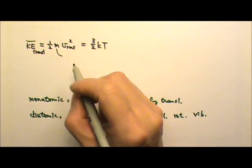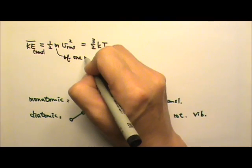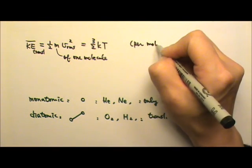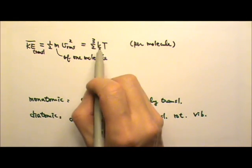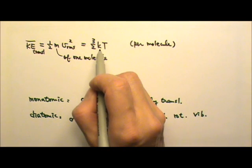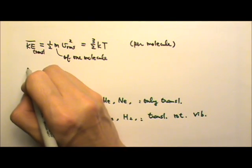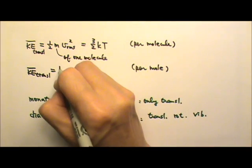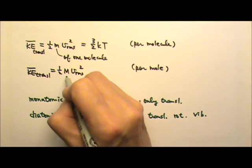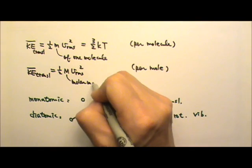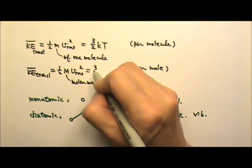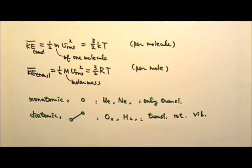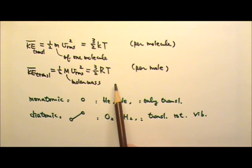It's important to know that the mass m here is the mass of one single molecule, and this is the average kinetic energy per molecule. If you remember, k is for molecule and R, the gas constant, is for mole. Which means we can write the average translational kinetic energy per mole as one half m times root mean square speed squared, where m would be the molar mass. In that case, this equals three halves RT. You should memorize these equations before moving on to the next lessons.